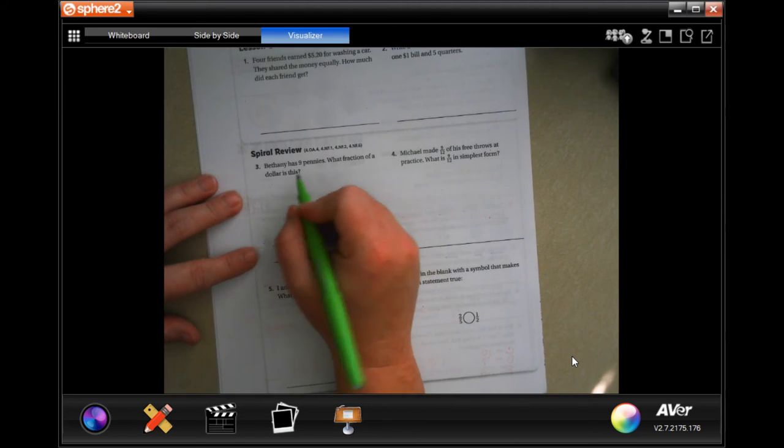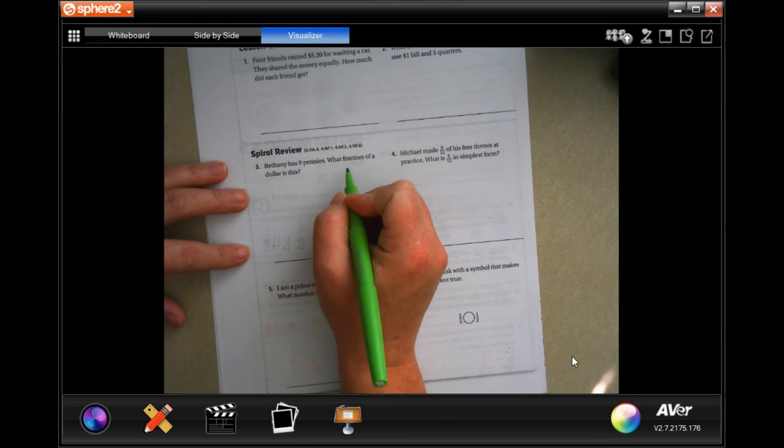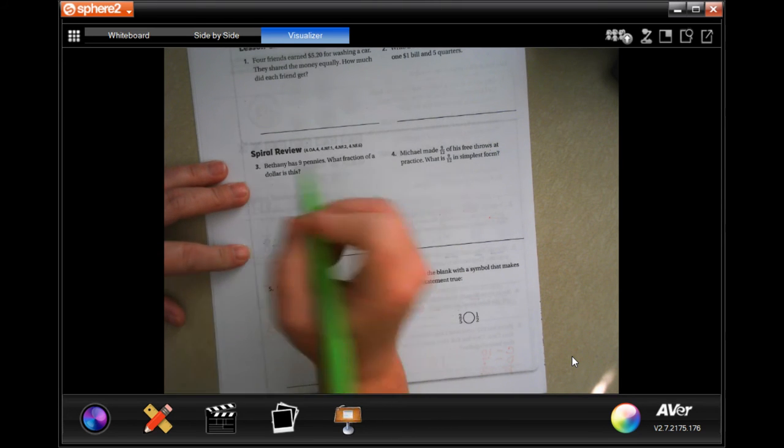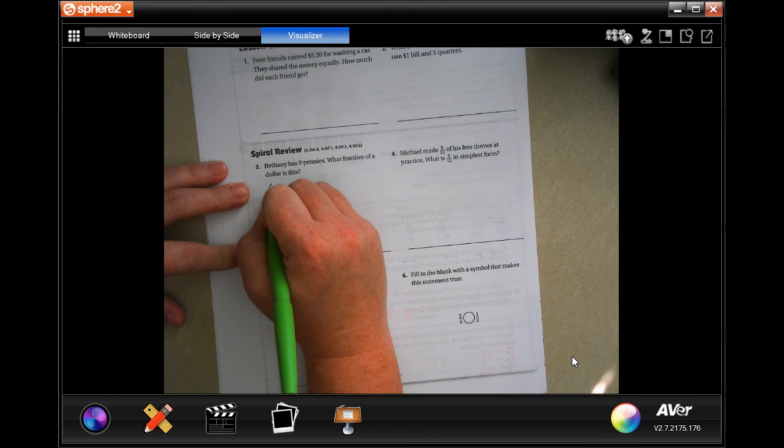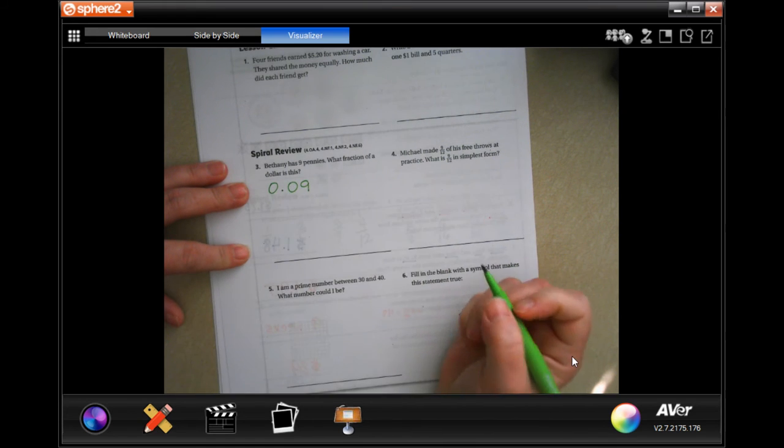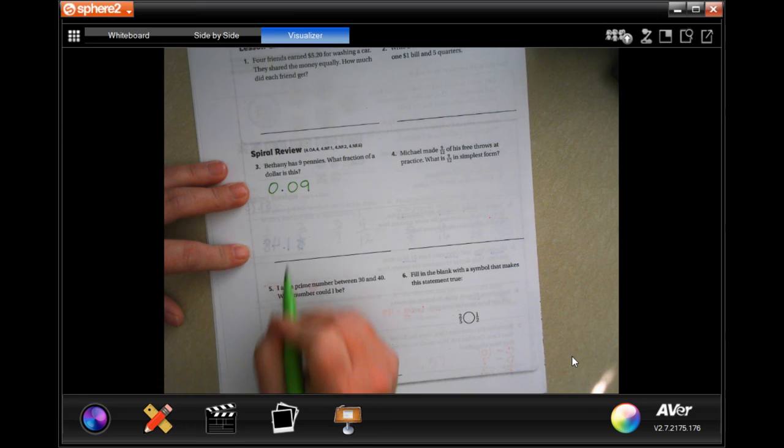All right, Bethany has nine pennies. What fraction of a dollar is this? So she has nine cents and our decimal would be 0.09. She has nine cents, no tens in there, just nine. Now that nine is in the hundredth place, you're done.